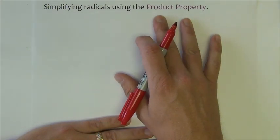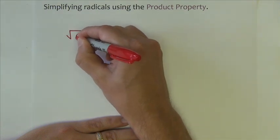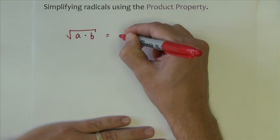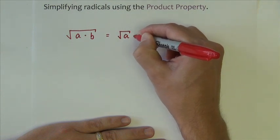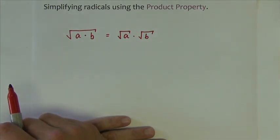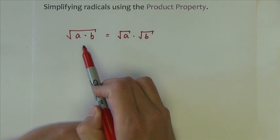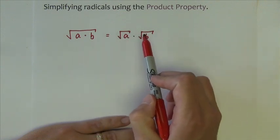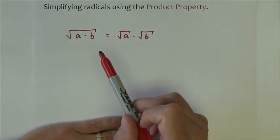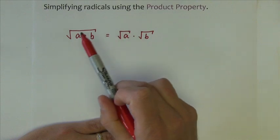And so we begin with this product property for simplifying radicals. It says that if you have a product underneath a radical A times B, that's the same as the product of radicals, square root of A times square root of B. It allows us to split one square root into two square roots separately. Most of the problems that we do in this particular lesson that involves simplifying radicals will involve this rule right here.